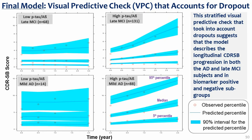This visual predictive check was part of the model qualification. The top panels represent late MCI subjects while the bottom panels show mild AD subjects. The graphs on the left are for subjects that are biomarker negative while the graphs on the right are for subjects that are biomarker positive. The VPCs suggest that the model describes CDRSB progression reasonably well in both AD and late MCI subjects and in biomarker positive and negative subgroups.